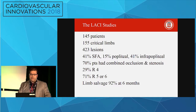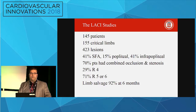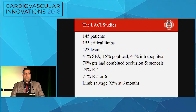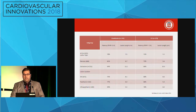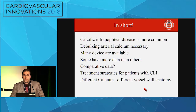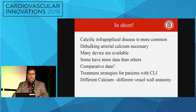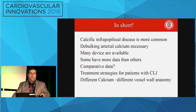The LACI studies - 145 patients, 155 critical limbs, 423 lesions, 41% SFA, 15% popliteal, but 41% infrapopliteal. 70% patients had combined occlusion and stenosis. Limb salvage 92% at six months - this clearly shows you that this is important. In the DEFINITIVE study, one-third were CLI and look at the 78% patency in these patients. In short: calcified infrapopliteal disease is more common, debulking arterial calcium is necessary, and there are many devices available - some have more data than others, but there is still lack of comparative data.